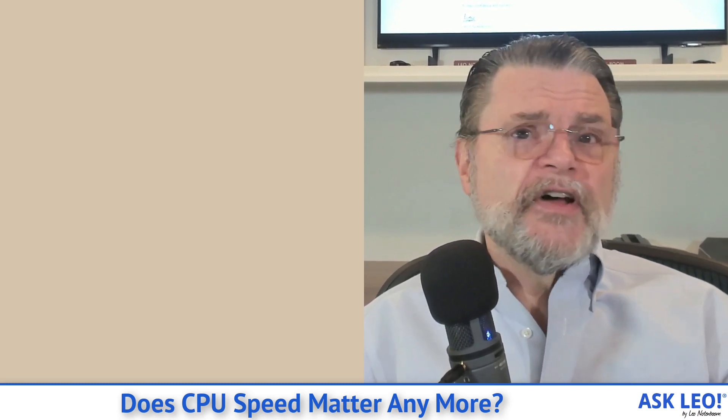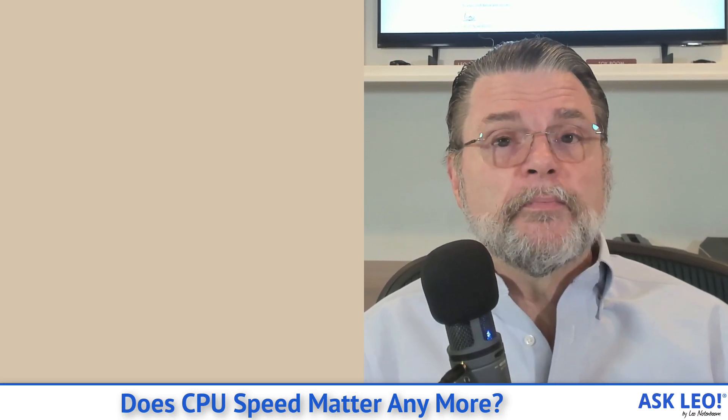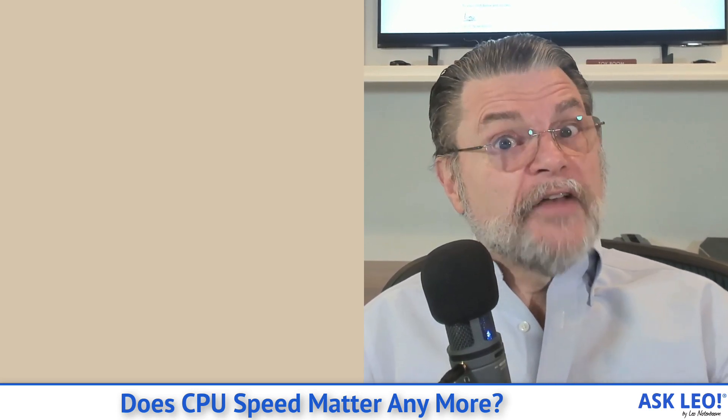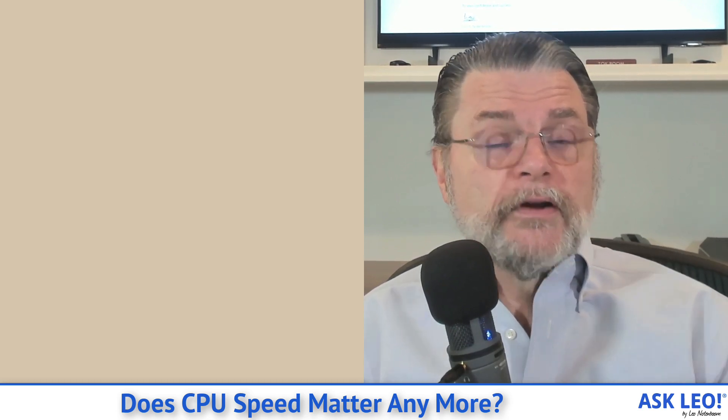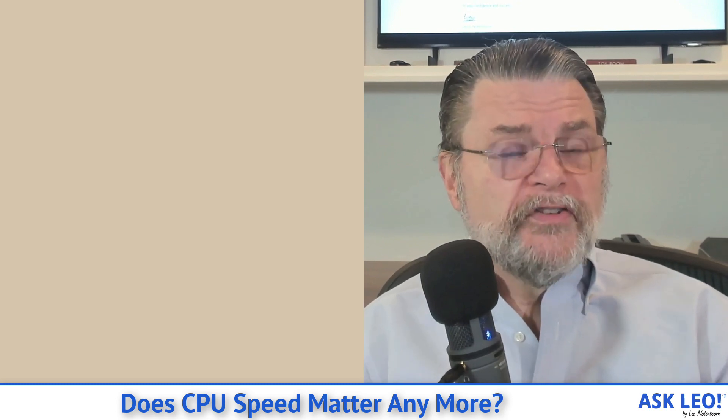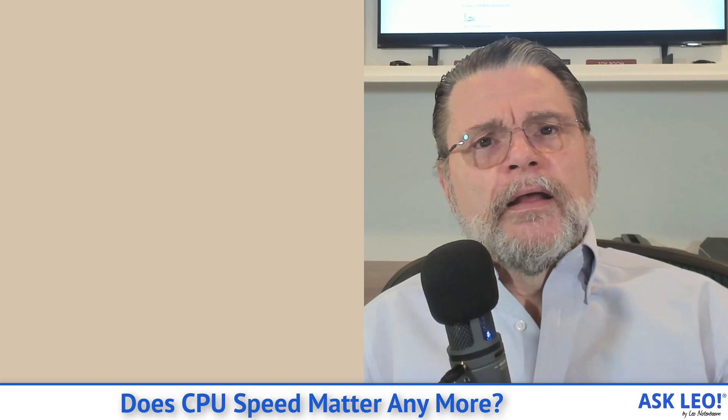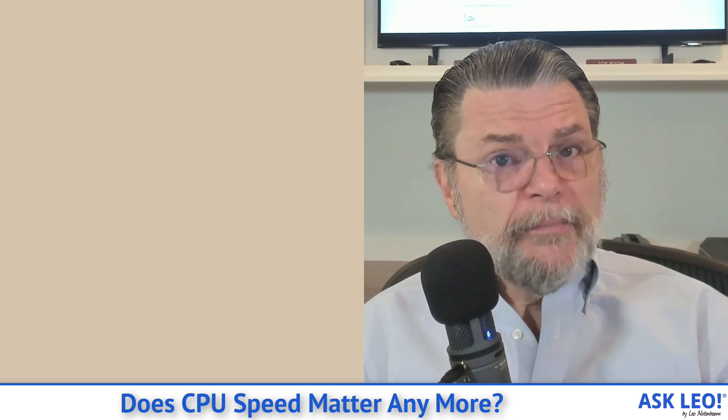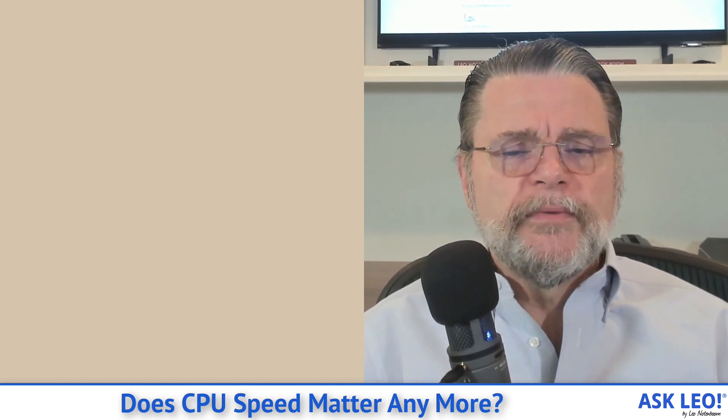The desktop that I'm staring at right now, for example, has a 3.5 gigahertz processor, whereas the Ask Leo server is running a 2.5 gigahertz processor. It's not uncommon for processor speeds to be in those kind of ranges. That speed is important, don't get me wrong, but it's not quite as important as it used to be.